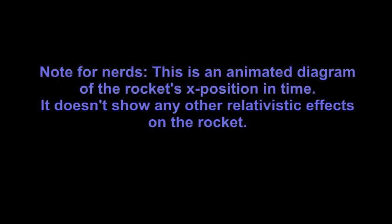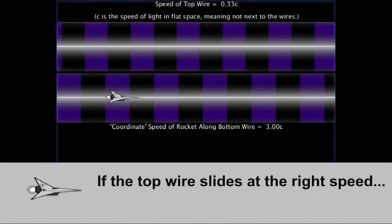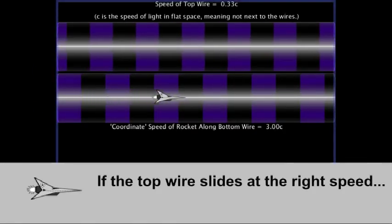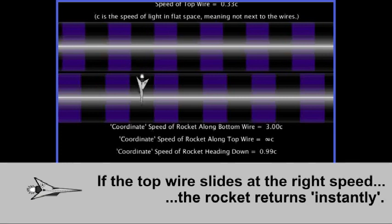Again, this is an animated diagram. It doesn't show any other relativistic effects on the rocket. Now if the top wire slides at exactly the right speed, the rocket's return journey is instantaneous from our point of view, which is another way of saying that the rocket's coordinate velocity on its return journey is infinite.